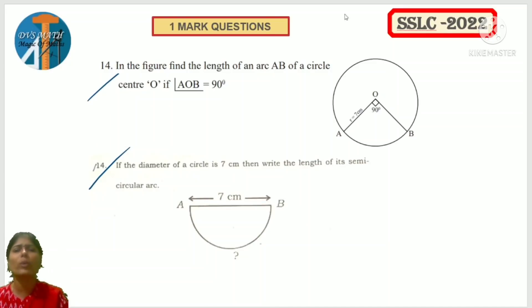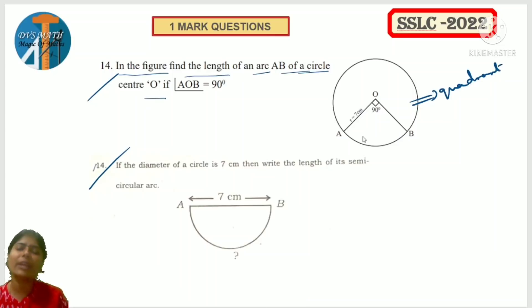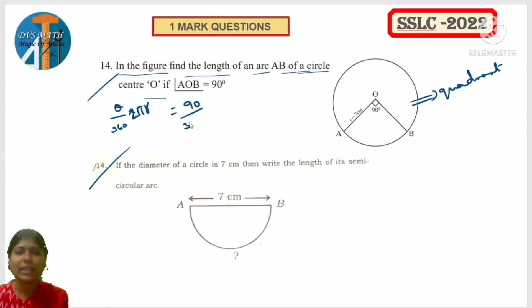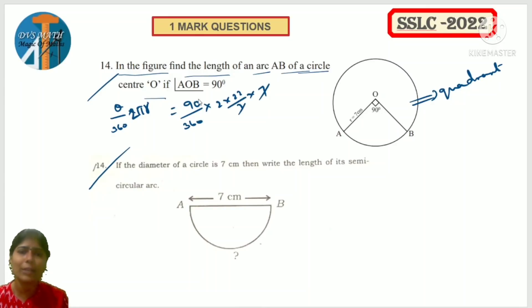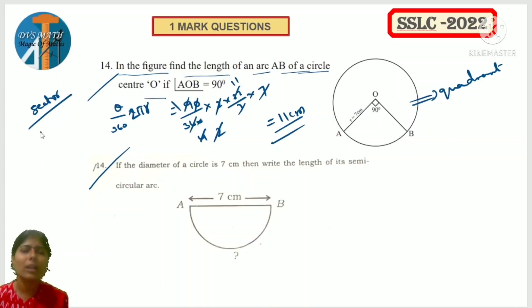Definitely one question is related to circles. Find the length of arc AB of a circle where angle AOB is 90 degrees - that's a quadrant. Area of sector formula: theta/360 × π r². Length of arc: theta/360 × 2πr. Question type: find area of sector or length of arc.